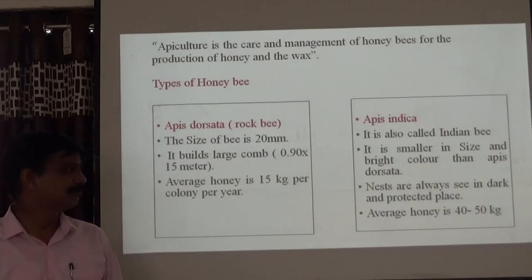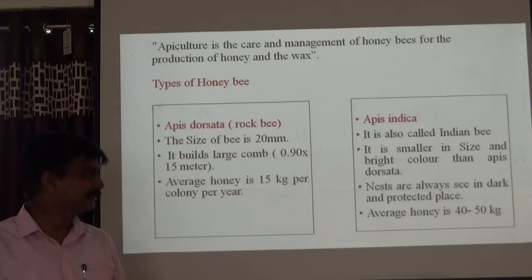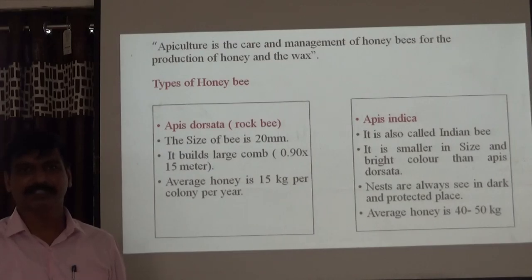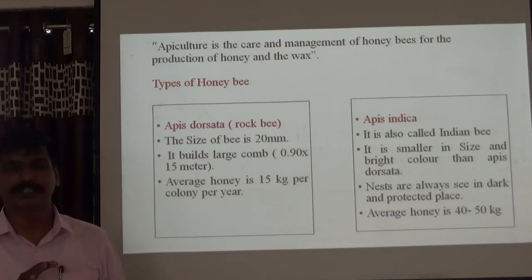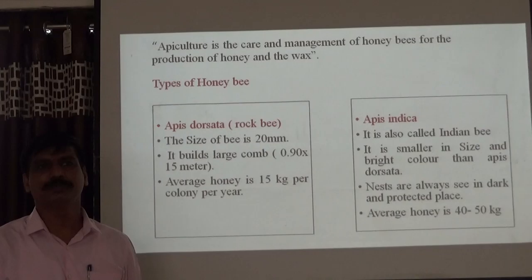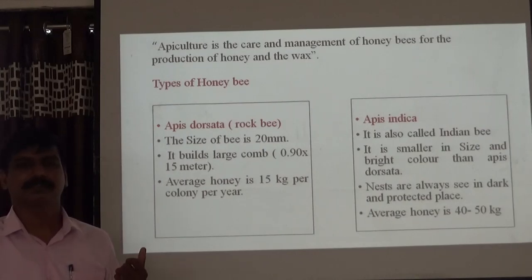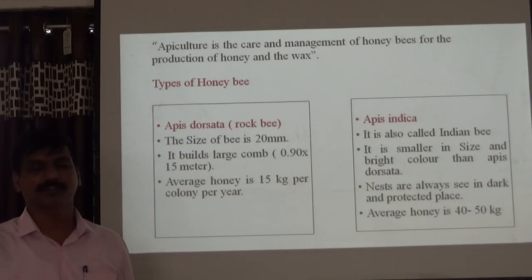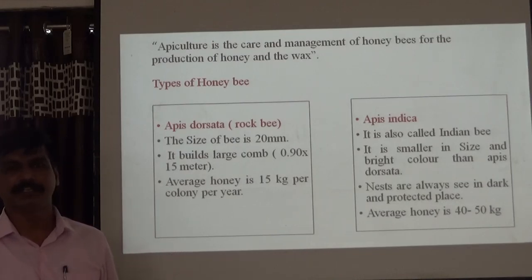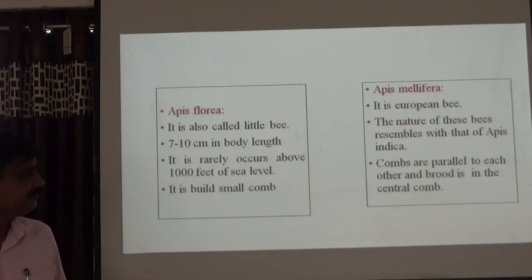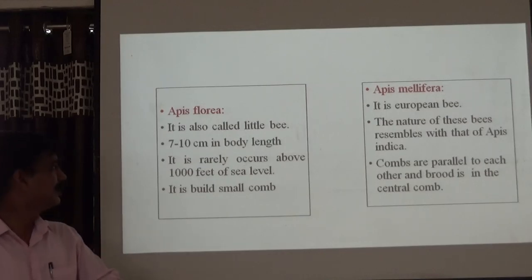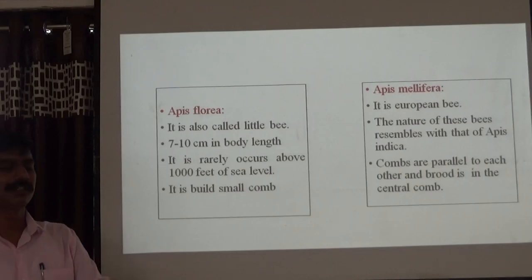Next species, Apis indica — it is also called the Indian bee. It is smaller in size and brighter in colour than Apis dorsata. The nest or beehive can be present in dark and protected places, such as below a roof or in a tree. Average honey production is around 50 kg. In our country, this species is used for apiculture, and production of honey and wax is high.